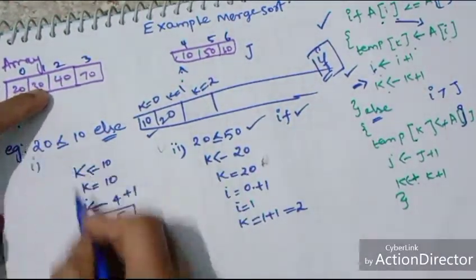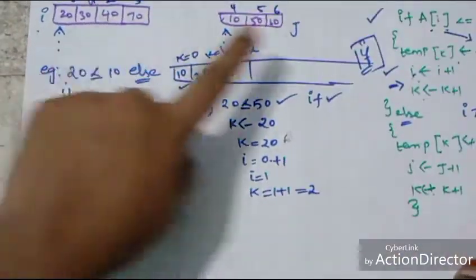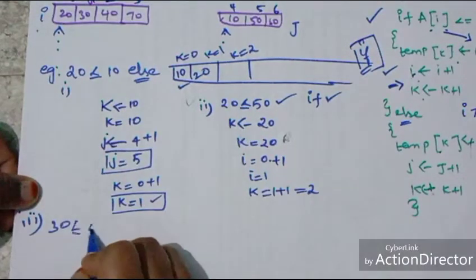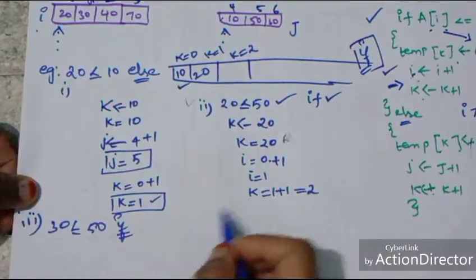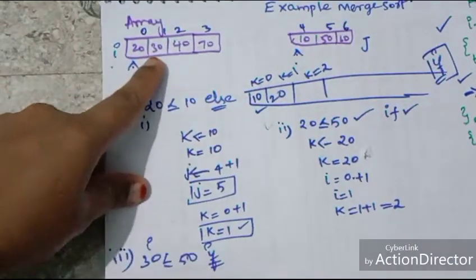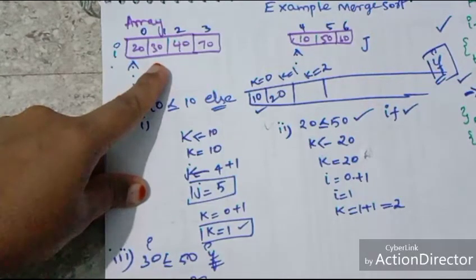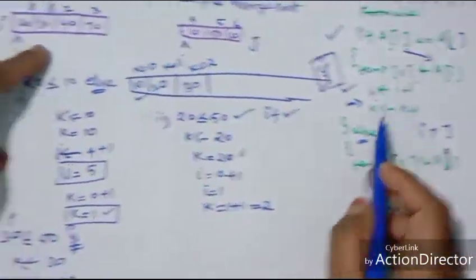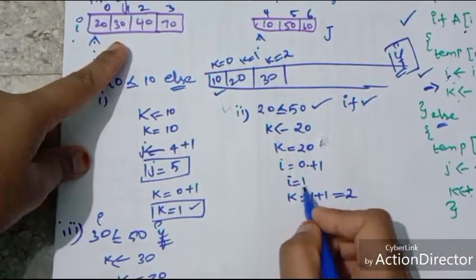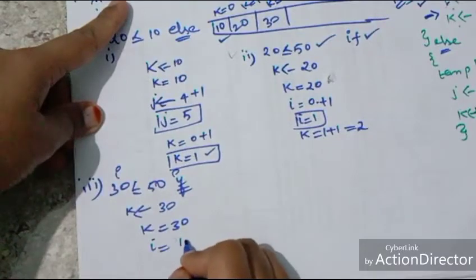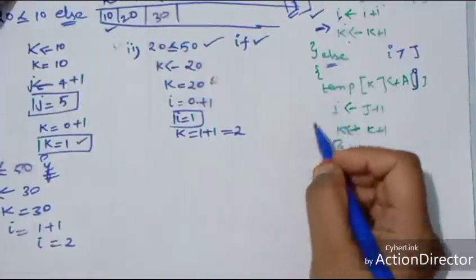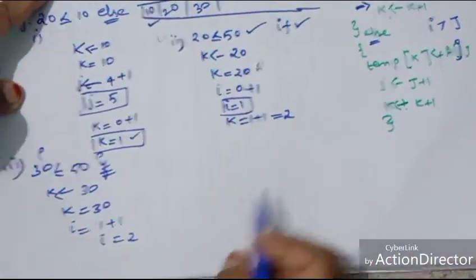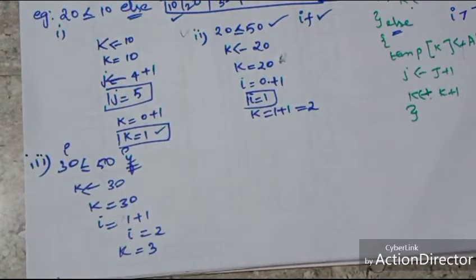Third condition: 30 is lesser than or equal to 50 — yes, it is. So the if part is executed. K equals A of I, which is 30. We directly substitute K equals 30. Then I equals 1 plus 1 equals 2, and K equals 2 plus 1 equals 3.